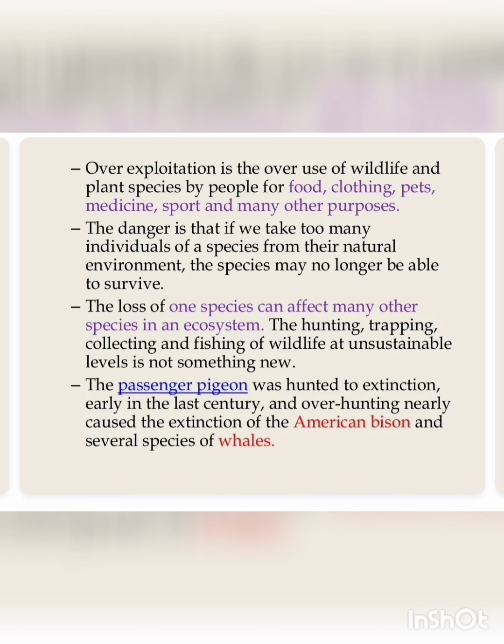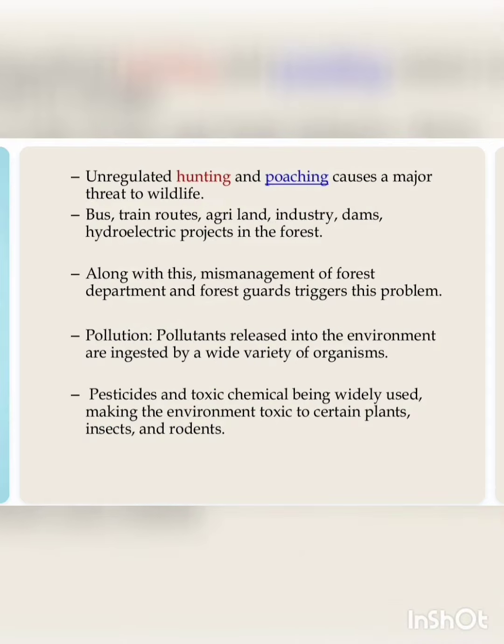Overexploitation is the overuse of wildlife and plant species by people for food, clothing, pets, medicine, sport, and many other purposes. The danger is that if we take too many individuals of a species from their natural environment, the species may no longer be able to survive. The loss of one species can affect many other species in an ecosystem. The hunting, trapping, collecting, and fishing of wildlife at unsustainable levels is not something new. Unregulated hunting and poaching cause a major threat to wildlife.